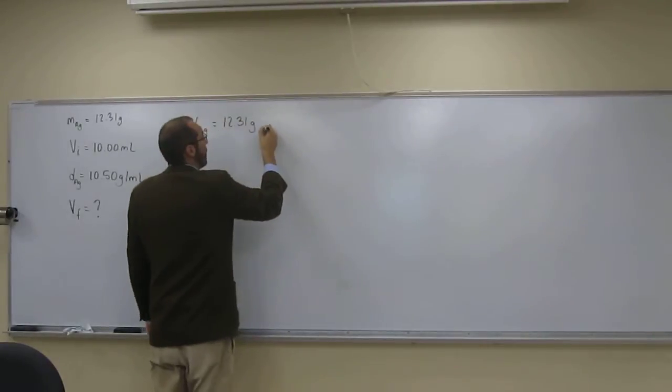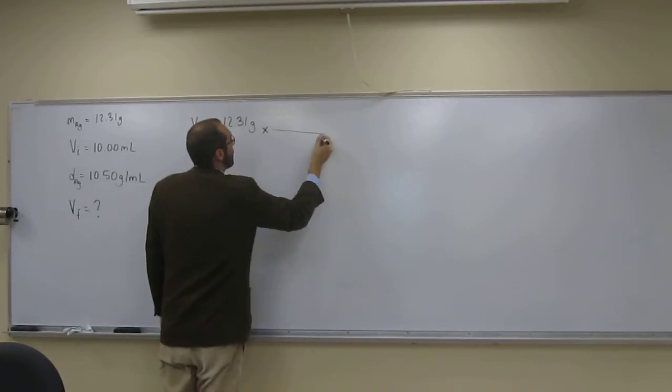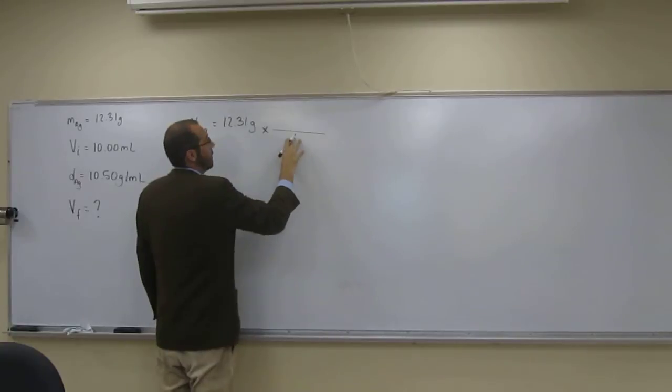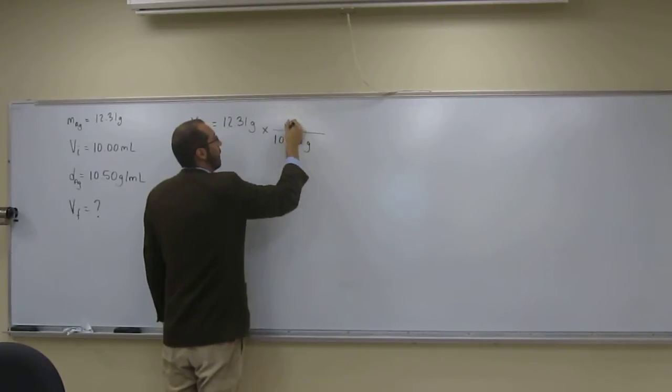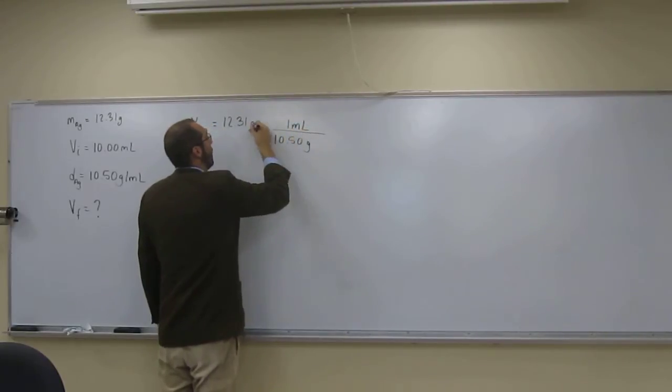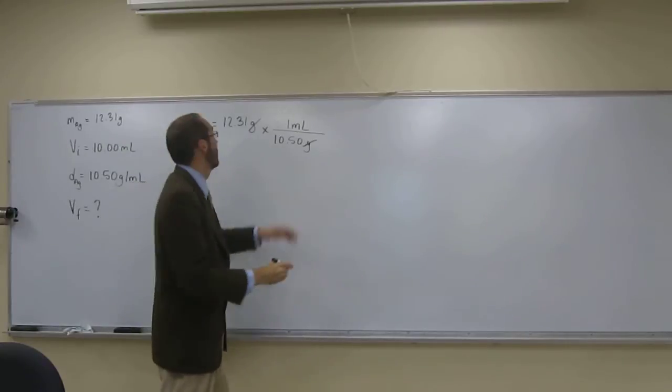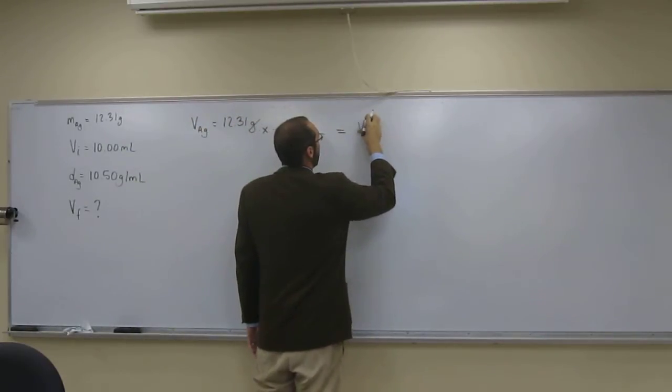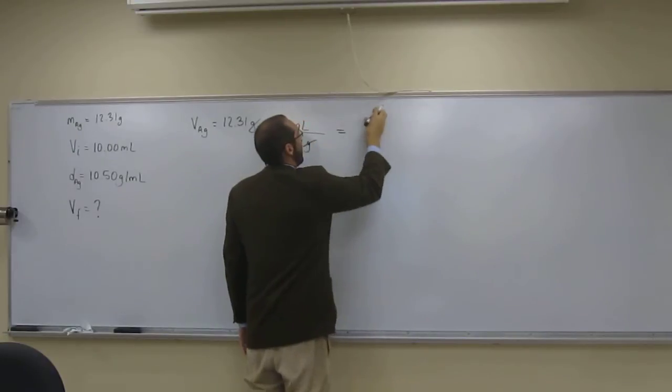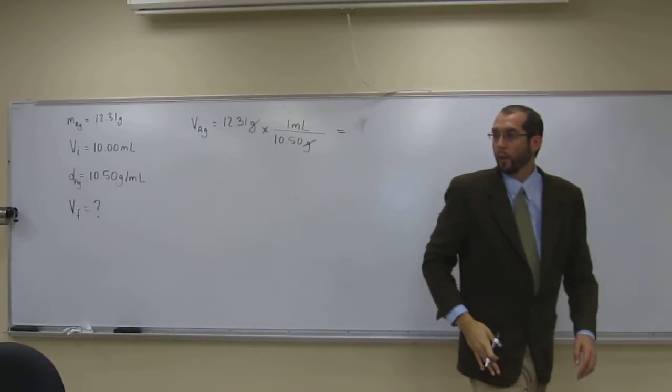So density you can use as a conversion factor going from mass to volume. So on the bottom, we're going to have to put our mass to cancel it out, so 10.50 grams is one milliliter, so that's going to cancel that, and that's going to give us the volume of the silver. So the volume of the silver is the volume of the object that you put in there.